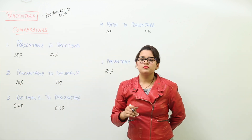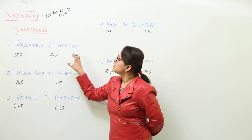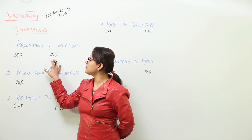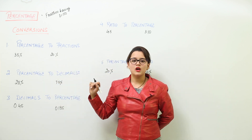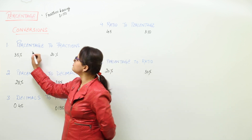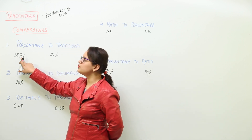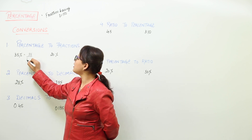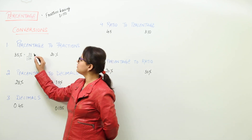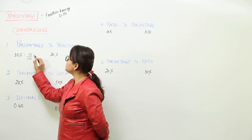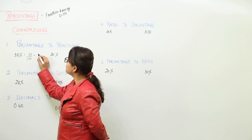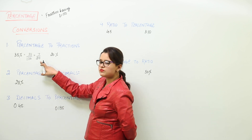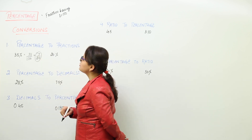Now we have to learn some conversions. First of all, how to convert the percentage to fractions. We have two examples: 35% and 20%, and we have to convert them to fractions. We just want to remove the percentage sign, so we write 35 upon 100. You can simplify it further by taking common factors, which gives you 7 upon 20. That is the simplest form, so this is the answer for the first conversion.